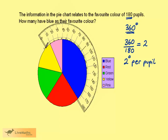Let's measure the angle of the blue sector. Using the protractor, we can see that this represents 140 degrees. Since we have 2 degrees per pupil, this represents 70 pupils.